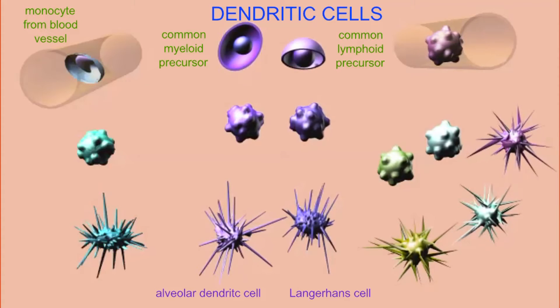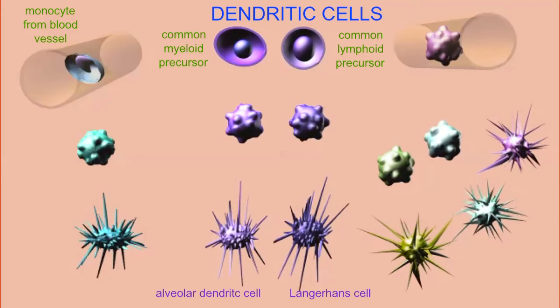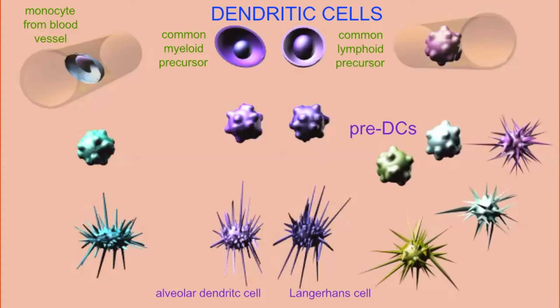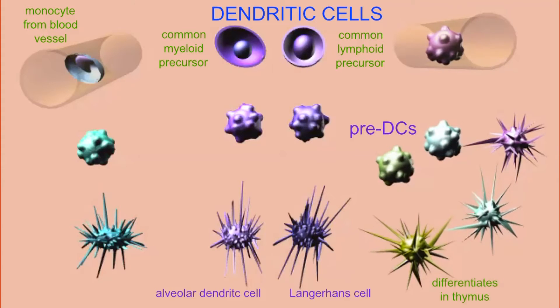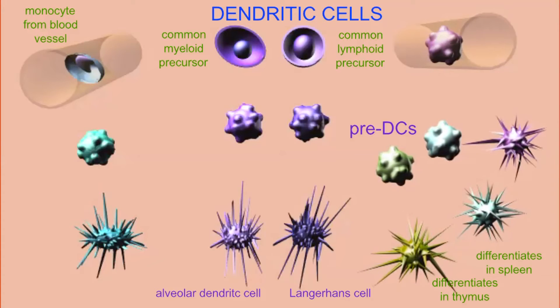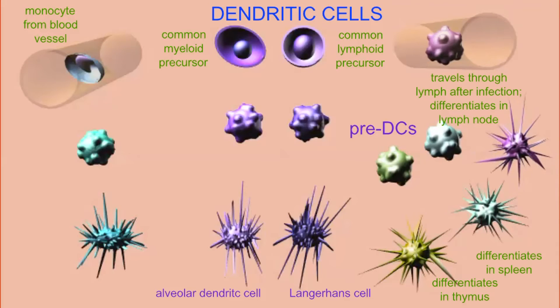So different bone marrow precursor cells can produce dendritic cells. Some dendritic cells travel as an immature cell, which goes to a lymphoid organ and differentiates there, such as the thymus, the spleen, or a lymph node, while other dendritic cells go to a different tissue and, upon being stimulated by infectious agents, travel through lymphatic vessels to lymph nodes where they differentiate into dendritic cells.